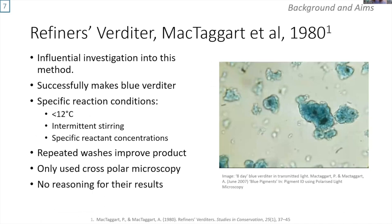The most significant study into this method was by McTaggart et al. in 1980, and their research has been very influential on the subsequent literature. They describe how they successfully made blue verditer, but only under specific conditions: less than 12 degrees with intermittent stirring and specific concentrations. They found that repeated washes improve the product color.